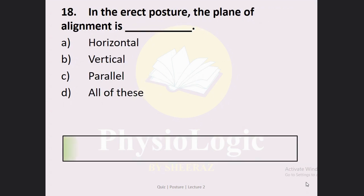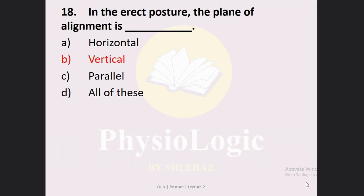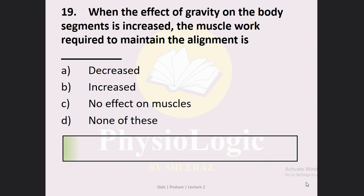Next MCQ: In the erect posture, the plane of alignment is — Option A: horizontal, Option B: vertical, Option C: parallel, Option D: all of these. The correct option is Option B: vertical — the plane of alignment in erect posture is always vertical.